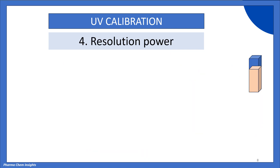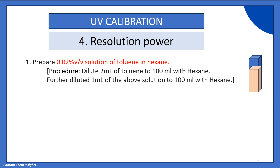The final parameter is resolution power. In this, we prepare a 0.02% volume by volume solution of toluene in hexane. Dilute 2 ml of toluene to 100 ml with hexane, then further dilute 1 ml of the above solution to 100 ml with hexane. This gives your 0.02% solution of toluene in hexane.